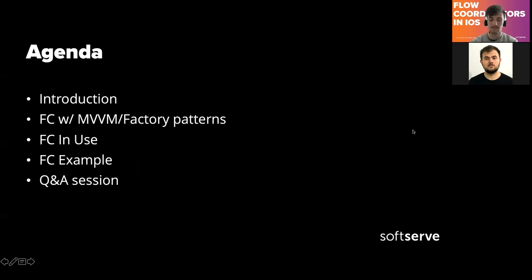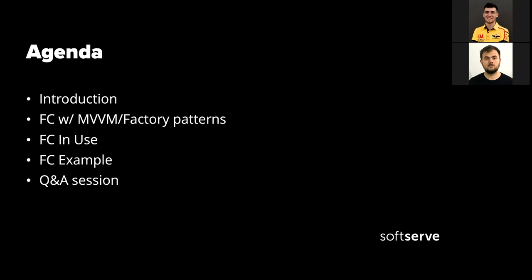We'll talk a little about the flow coordinators pattern in general terms. Then we will discuss some other patterns which I'm using alongside this flow coordinators pattern. From now on I'm going to say FC instead of flow coordinators because it's just easier for me. Then we are going to look at how it's used in practice. I also have a small example iOS app which uses this approach with FC, MVVM, and factory patterns. And then we'll have a Q&A session.